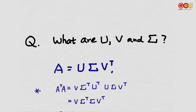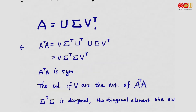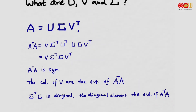So what is this? This is something we have learned before. A-transpose A is a symmetric square matrix, so this expression is precisely the diagonalization of a symmetric matrix. The V here — its column vectors are the eigenvectors of A-transpose A, and sigma-transpose sigma is a diagonal matrix whose diagonal elements are the eigenvalues of A-transpose A. So to obtain V and sigma, we simply compute the product A-transpose A and find its eigenvectors and eigenvalues.